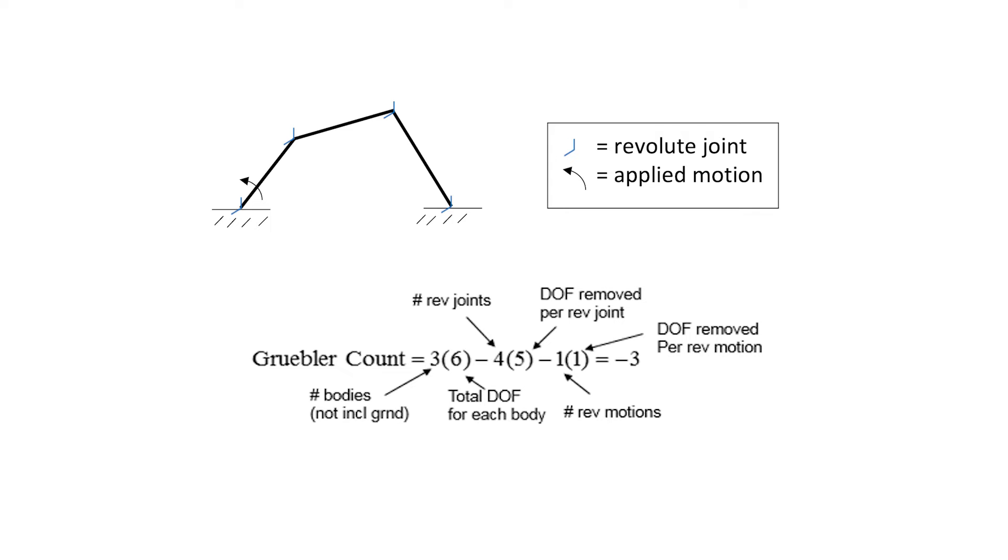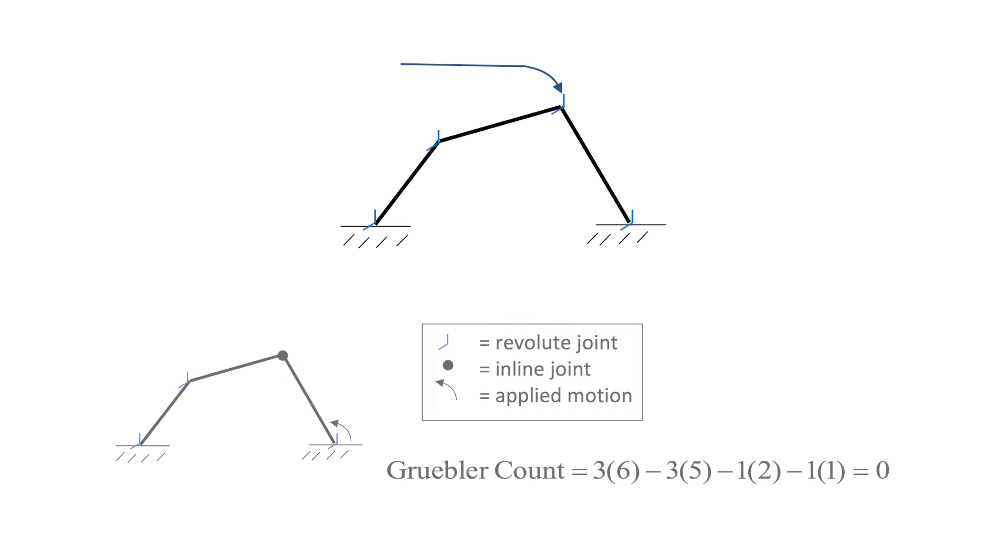A negative number means the mechanism is over-constrained, but a positive count does not necessarily mean that the mechanism is not over-constrained. How can we fix this problem? First imagine that one of the joints does not exist. Then we have two independent mechanisms that must rotate in plane.